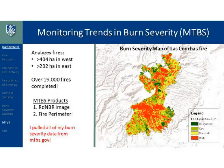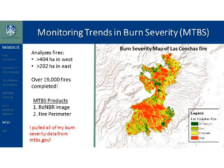I acquired all my burn severity data from the MTBS Program — Monitoring Trends in Burn Severity. The project began in 2006, processes all Landsat imagery to make it accessible to the public, and provides burn severity and geospatial information on fires greater than 1,000 acres in the West and 500 acres in the East. So far they've completed over 19,000 fires. The two products I mostly used were the RdNBR image and the fire perimeter information.